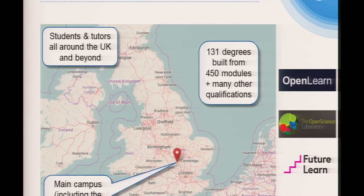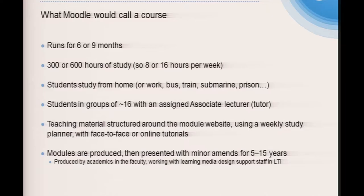You can't really draw the Open University on a map because we're a distance education institution. All our students study from wherever they happen to be in the UK or beyond. The one thing you can draw on the map is the main campus in Milton Keynes, where Chris and I work and where the Moodle servers are hosted. OU study is modular — modules are quite big things, several hundred hours of learning, running for six or nine months, studied part-time.